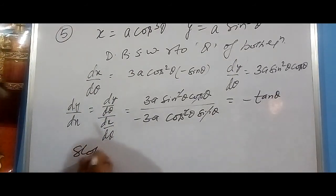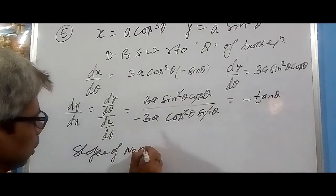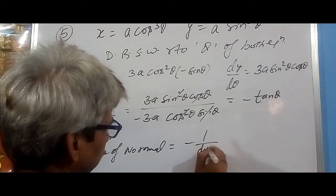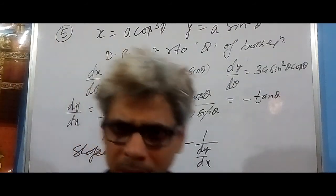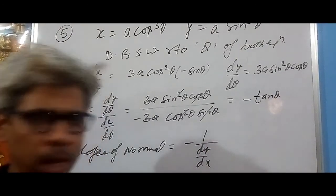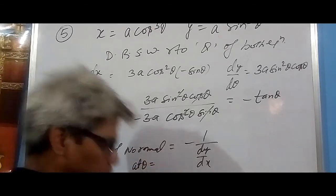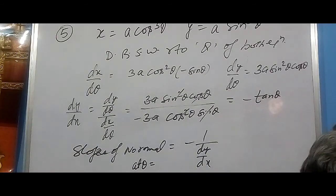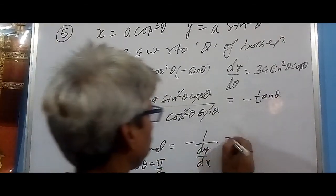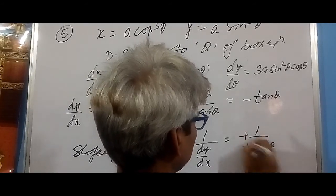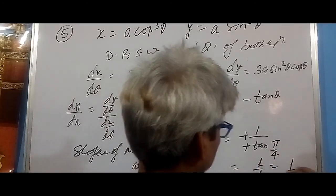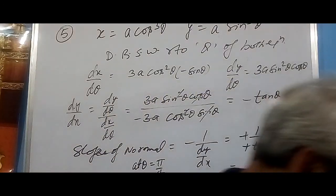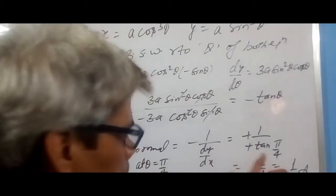Now you have to find slope of normal. Slope of normal = -1 / (dy/dx), because slope of tangent is dy/dx = m, so slope of normal = -1/m. With θ = π/4 given, this becomes -1 / (-tan(π/4)) = -1 / (-1) = 1. So slope of normal = 1. If you needed equation of tangent, the slope would be -1.